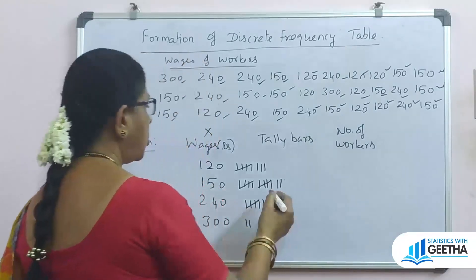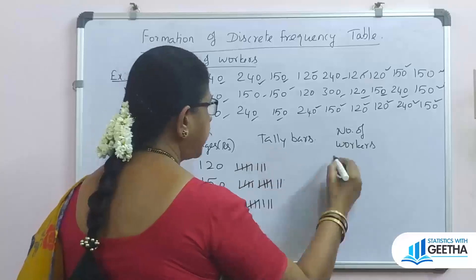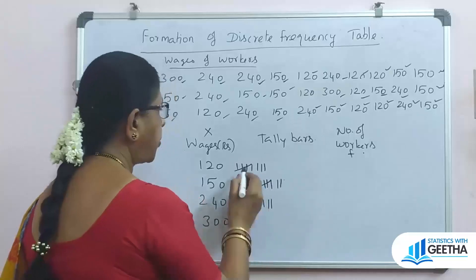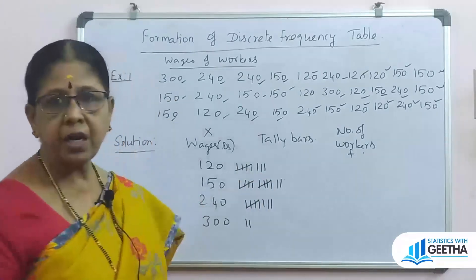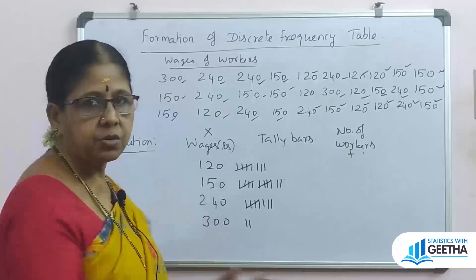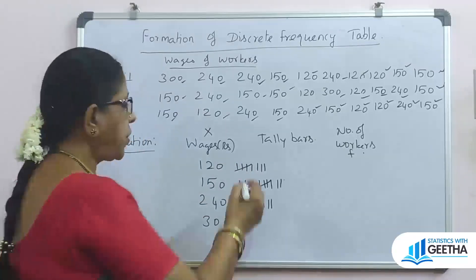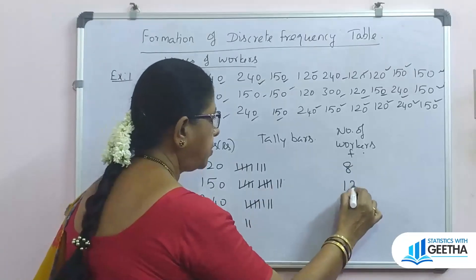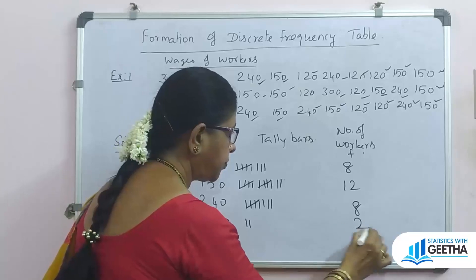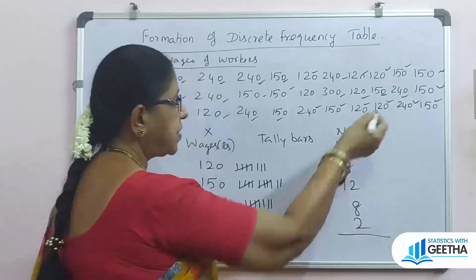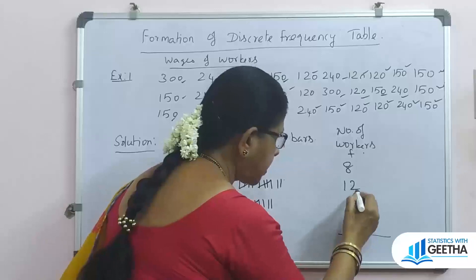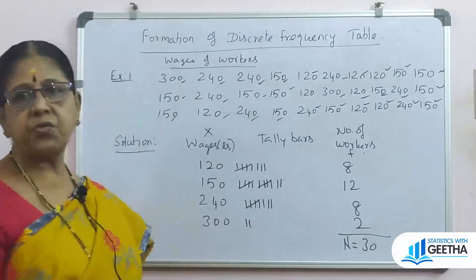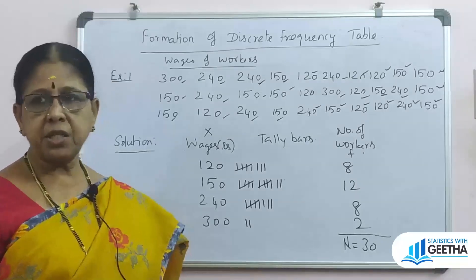Now these are the tally bars. This is the number of workers, or frequencies. We count them. The cross tally is used to make counting easy — when 5 tallies are complete, we cross them. So 5 plus 3 is 8, 10 plus 2 is 12, again 8 and 2. Total frequency: 12 plus 8 is 20, plus 8 is 28, plus 2 is 30. So our n equals 30. This is how we form a discrete frequency table.